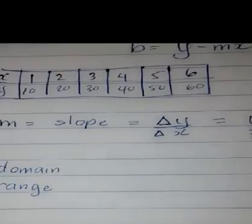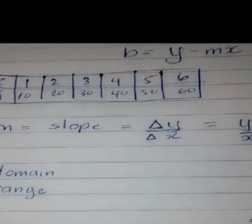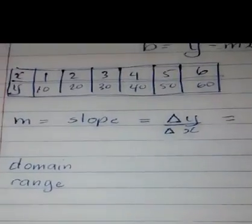As we can see, m, or the slope, is simply delta y over delta x, or the change in y over the change in x.